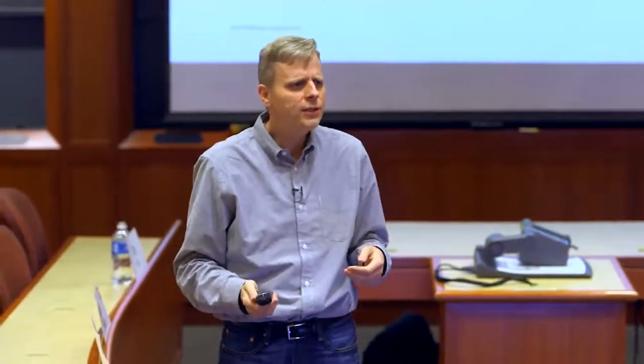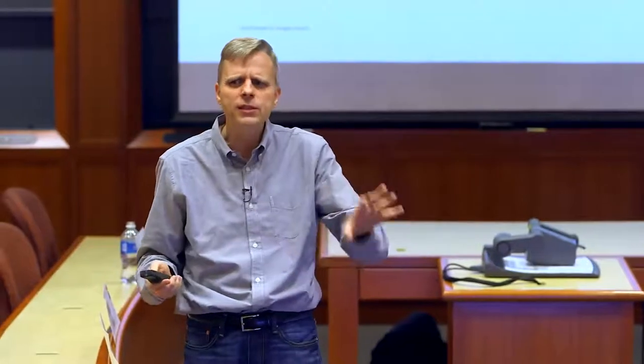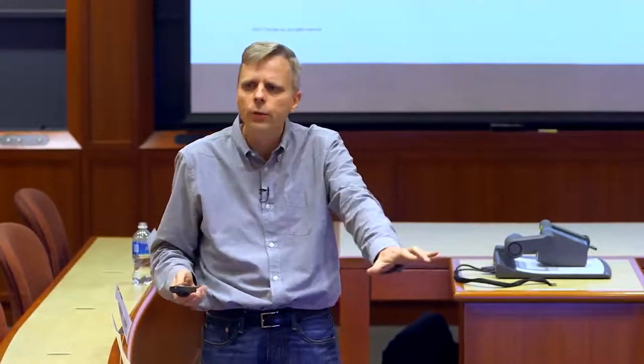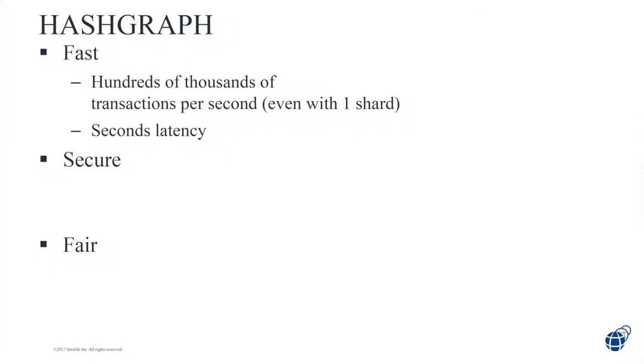This can be fast. There are caveats on speed, of course. If your transactions take a long time to process, your network will be limited by that. But the consensus part itself is incredibly fast — you basically get the network for free. That's what I mean when I say Hashgraph is fast. It allows you to do ledgers that are fast, which opens up new kinds of applications like games that you couldn't do before.